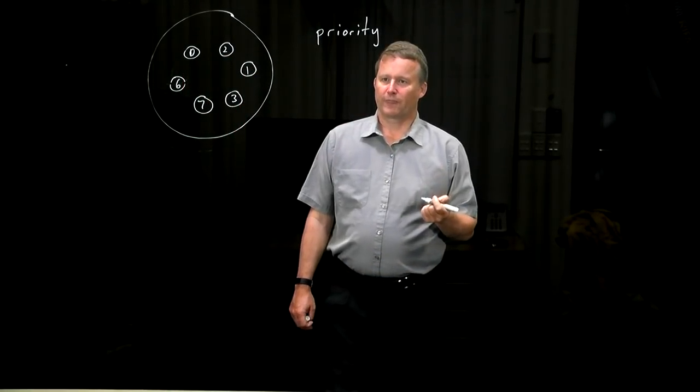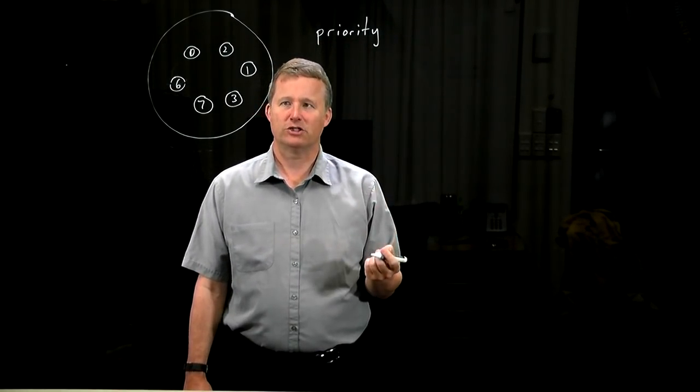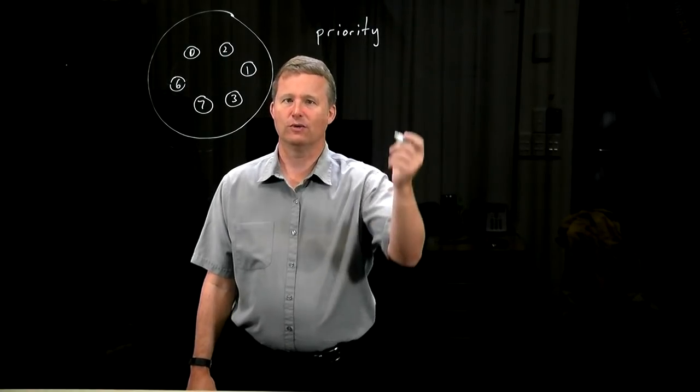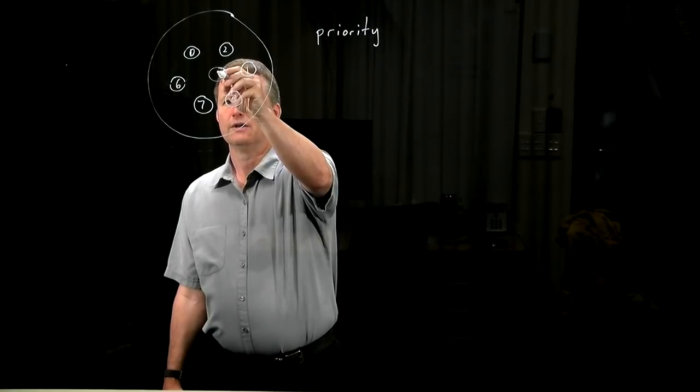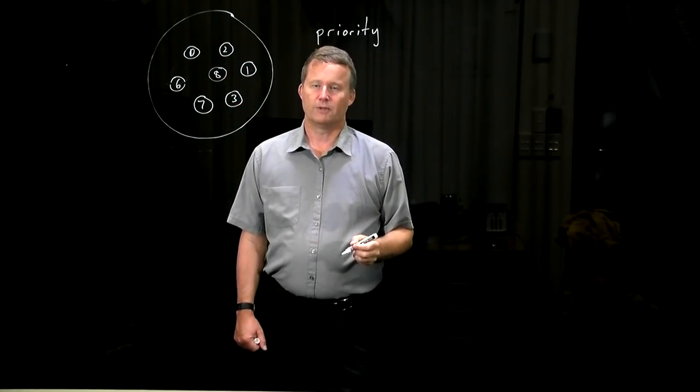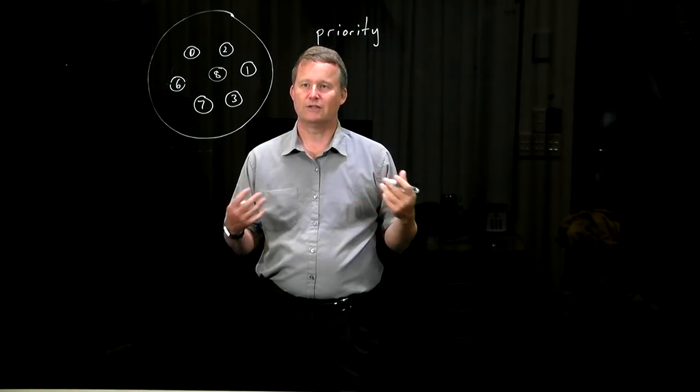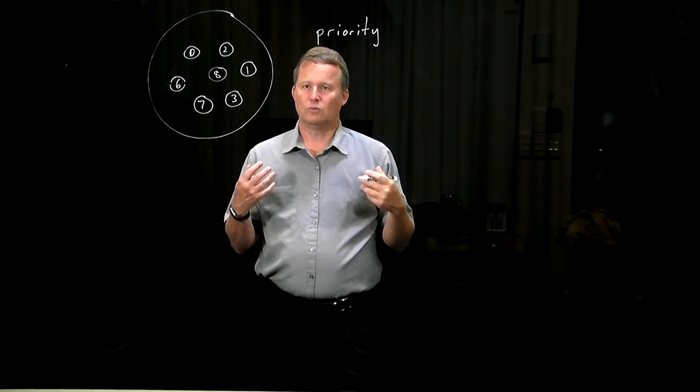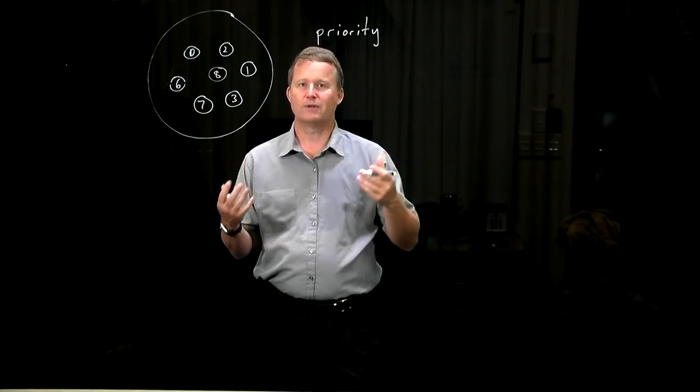Now, the priority queue has only a couple of basic operations. One is to insert. A new element comes along, it can be inserted, and it will get a different priority value from the original. It can have any priority at all. It doesn't have to be related to what's already in there, and it doesn't have to be related to the time that it arrived.